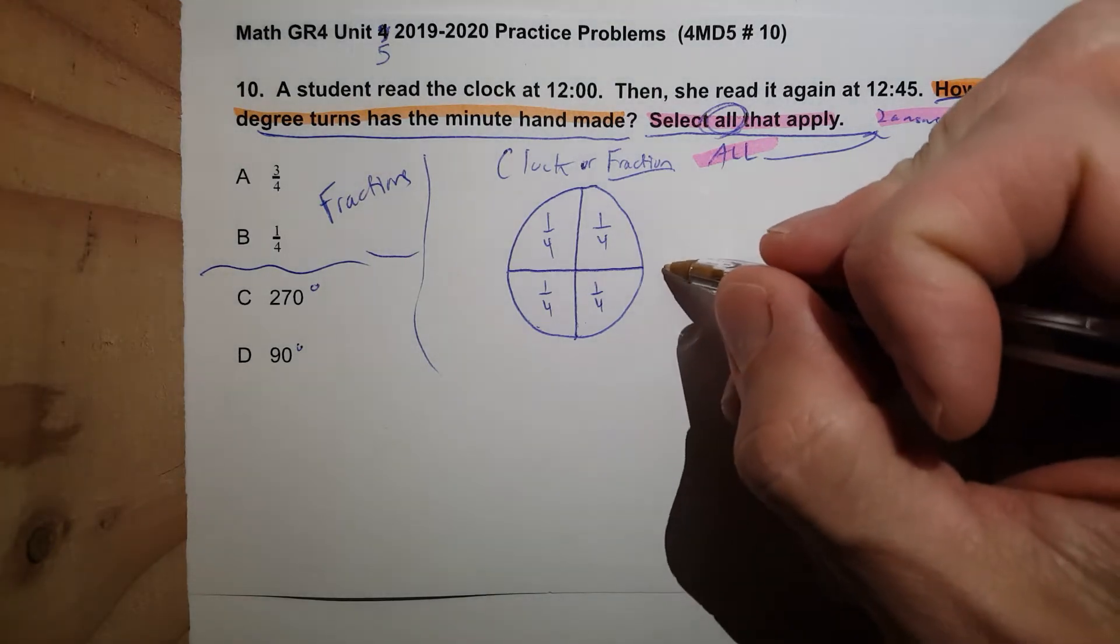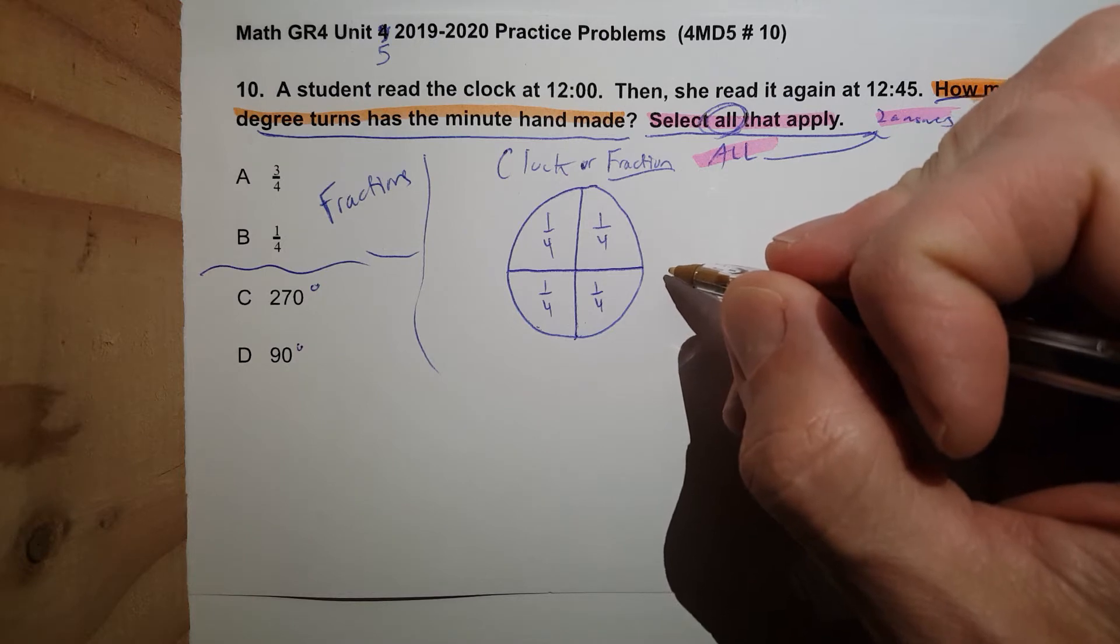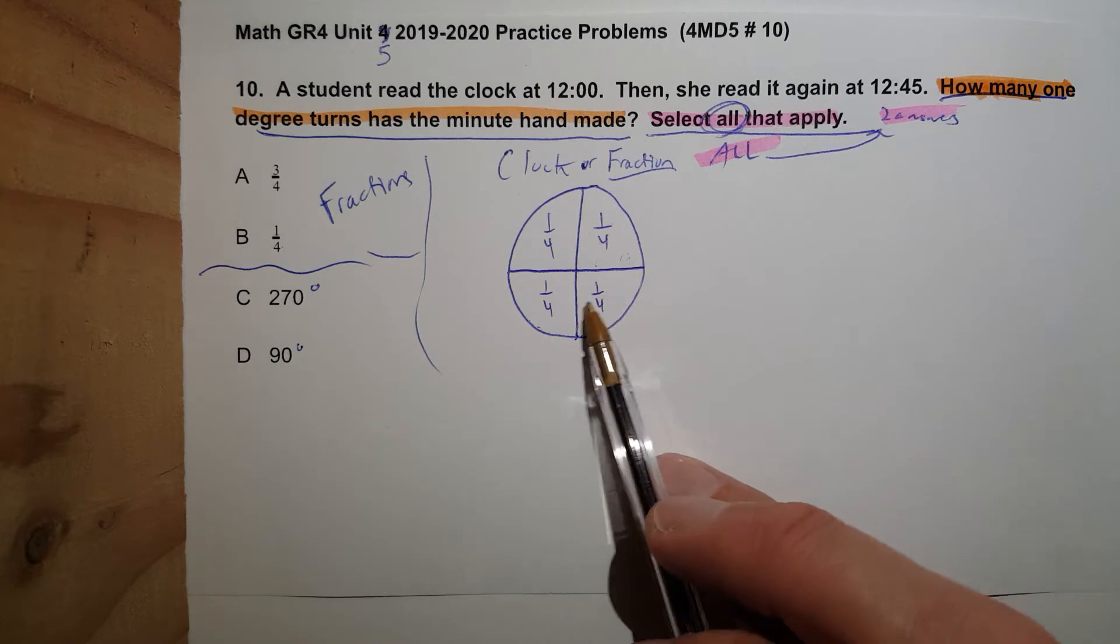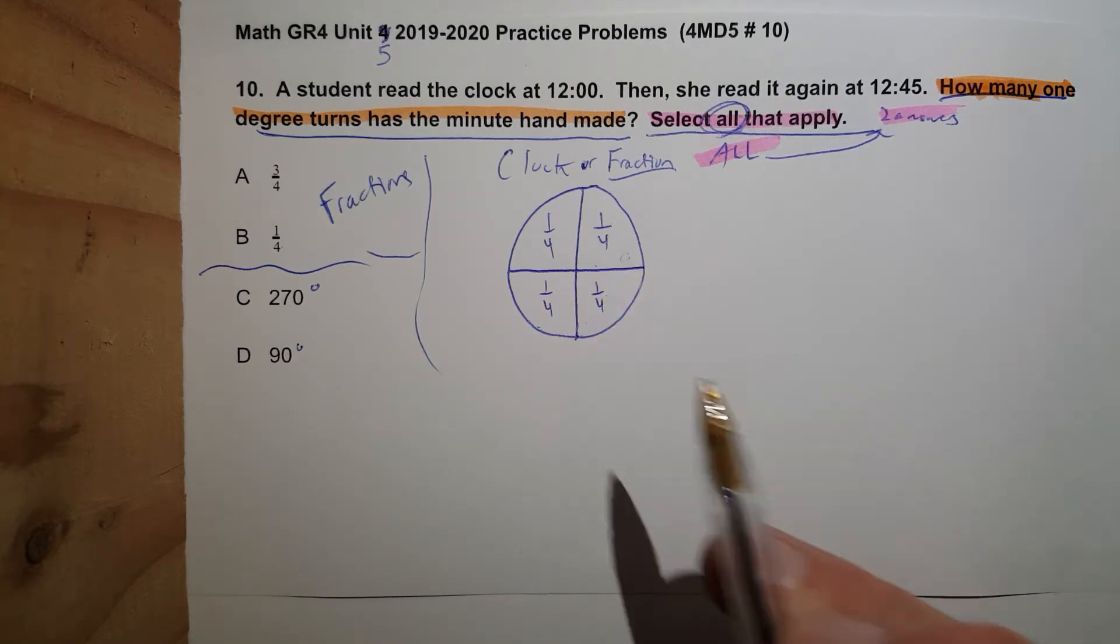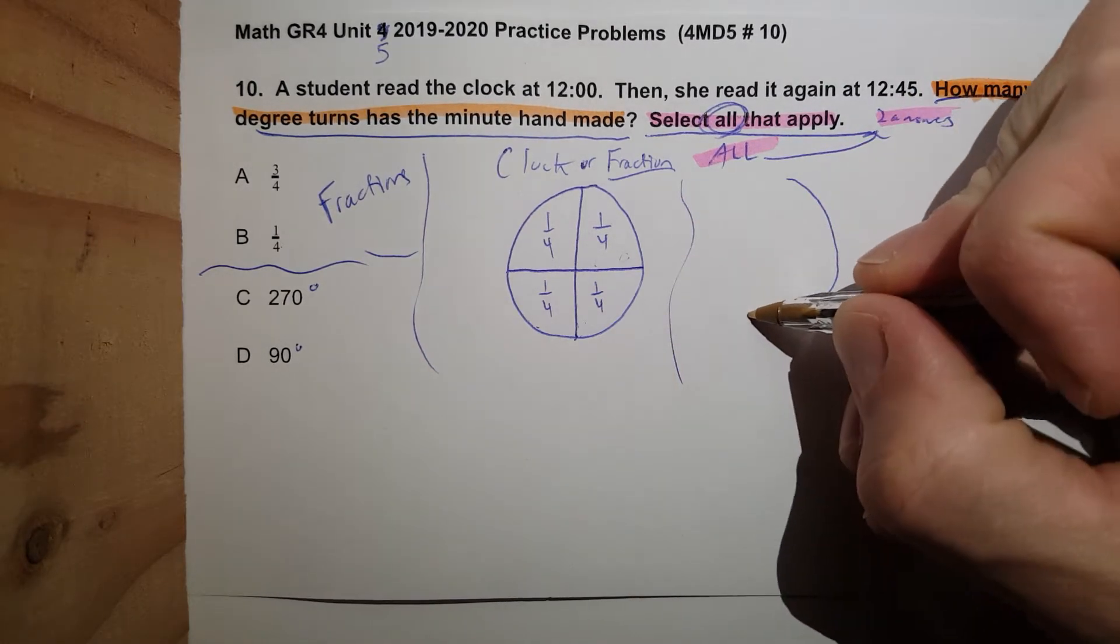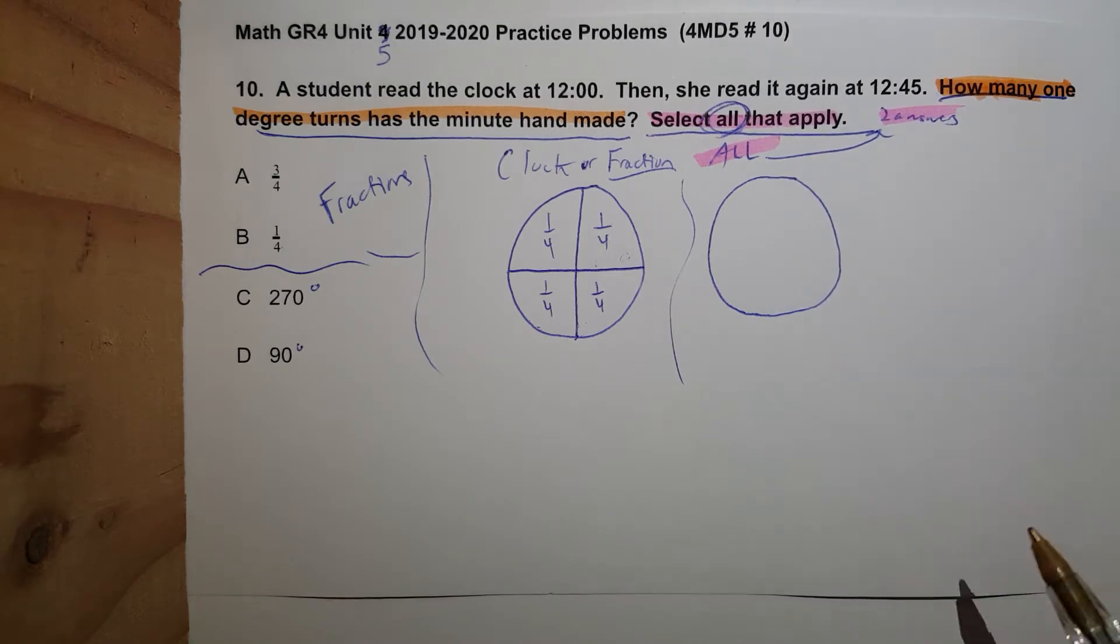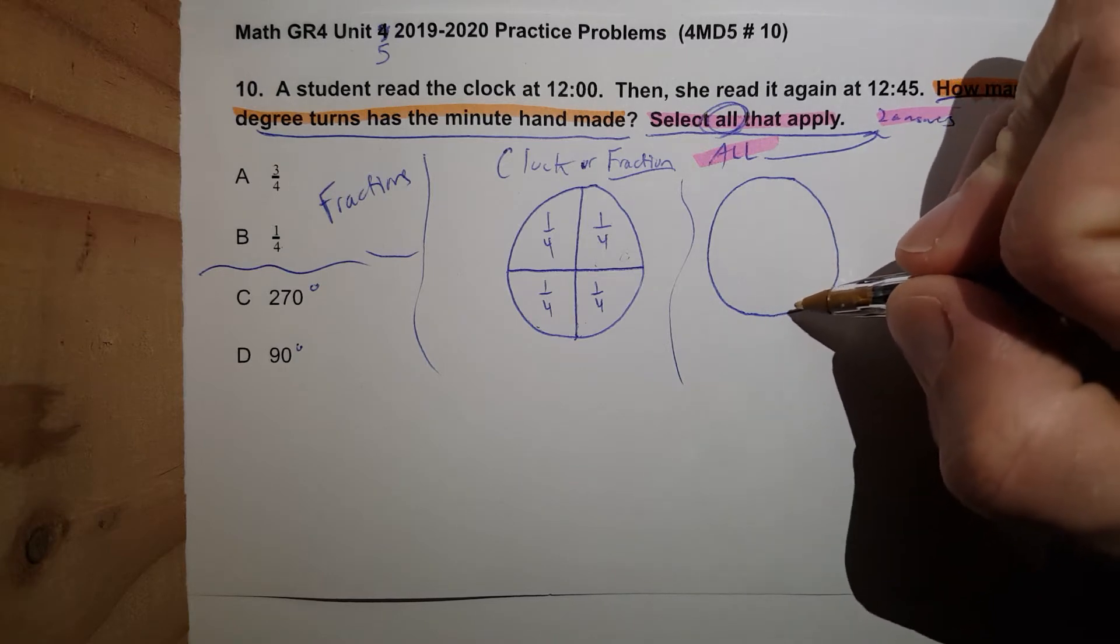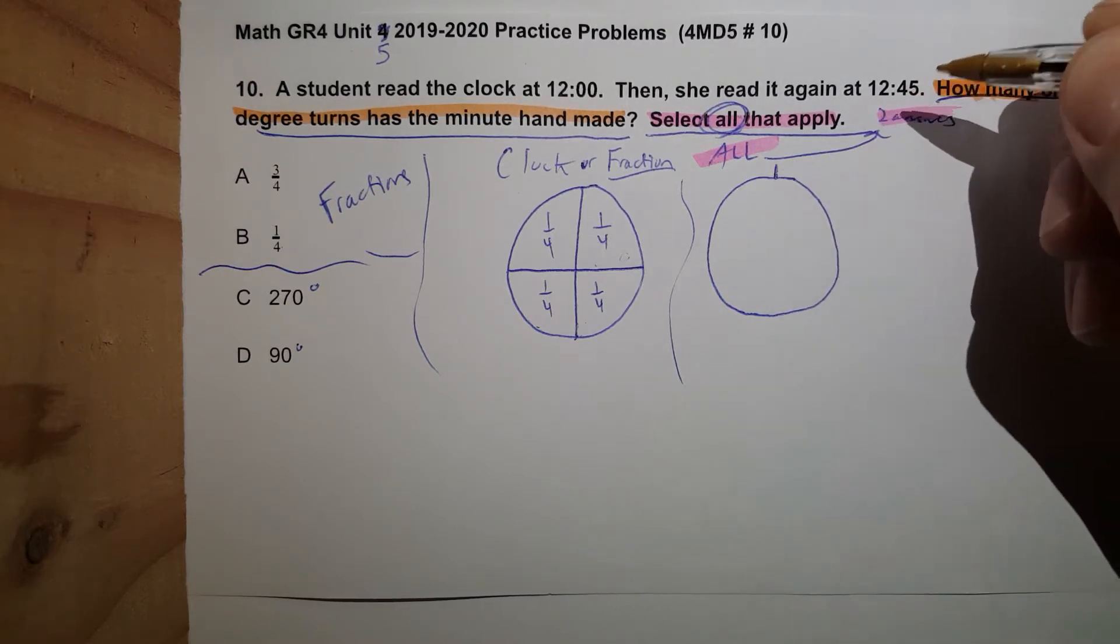Clock or fraction. Let's do fraction first: one fourth, one fourth, one fourth. There's lots of ways to do this problem. Here we go. Notice how it has one fourth, so that would just be this three fourths, one two three, it'd be all of this. Let's go with it. Here's a clock, 12 o'clock.